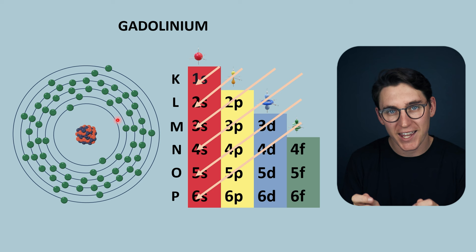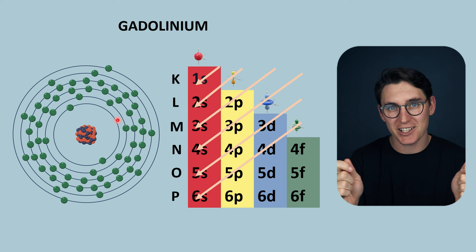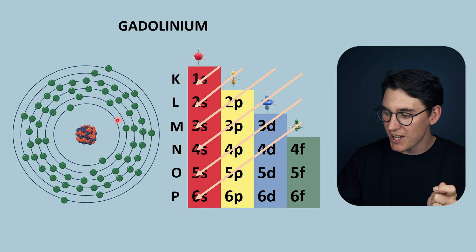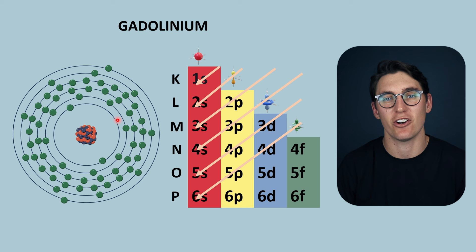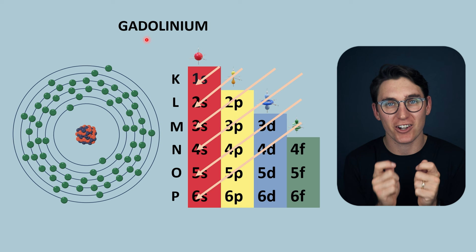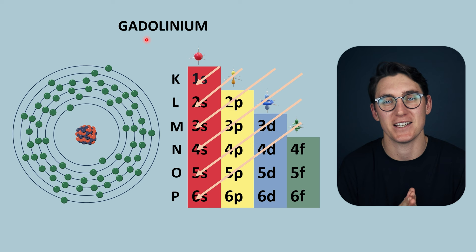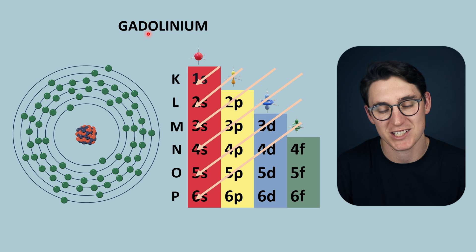Gadolinium will cause a change in the magnetic field. Essentially, gadolinium will increase the amount of spin-lattice interactions, causing hydrogen protons that have nuclear magnetic resonance to start regaining their longitudinal magnetization much more rapidly. Importantly, gadolinium at high concentrations is also going to reduce the T2 time — it's going to cause rapid dephasing. But predominantly the mechanism for generating more signal in contrast-enhanced MR angiography is that gadolinium rapidly reduces the T1 times.